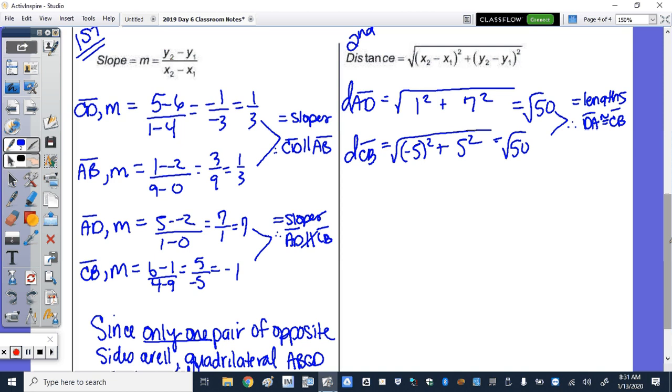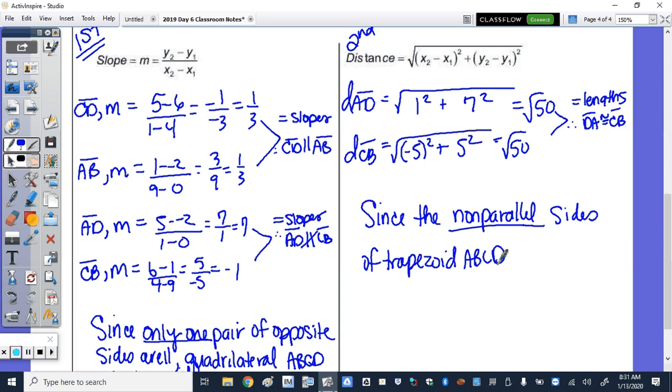So my write-up, since the non-parallel sides of trapezoid ABCD are congruent, then it is isosceles.